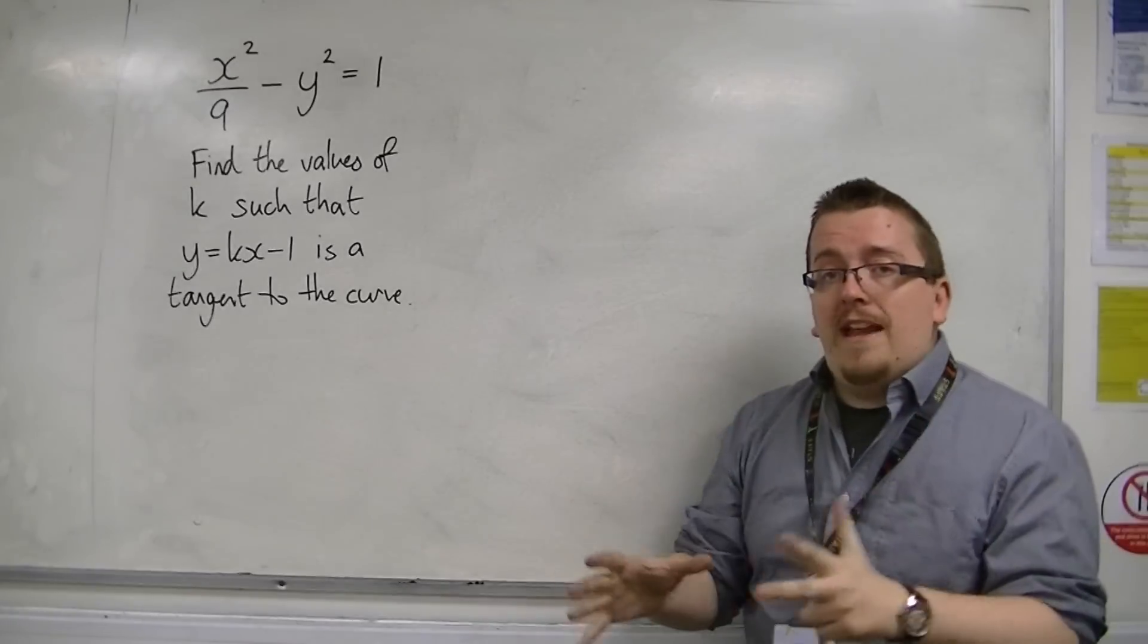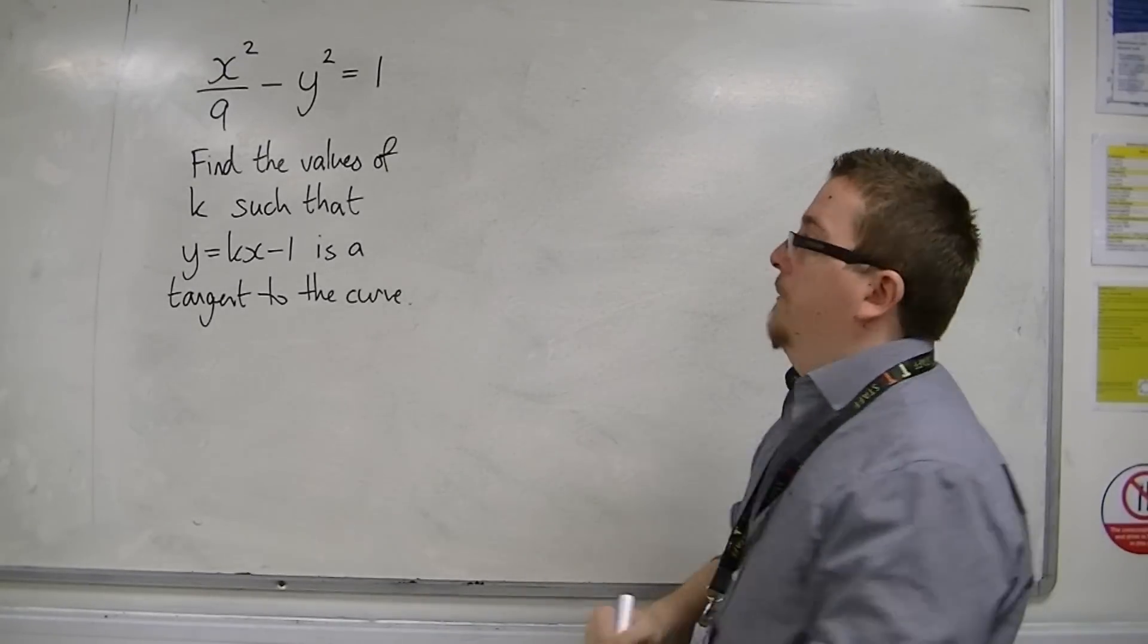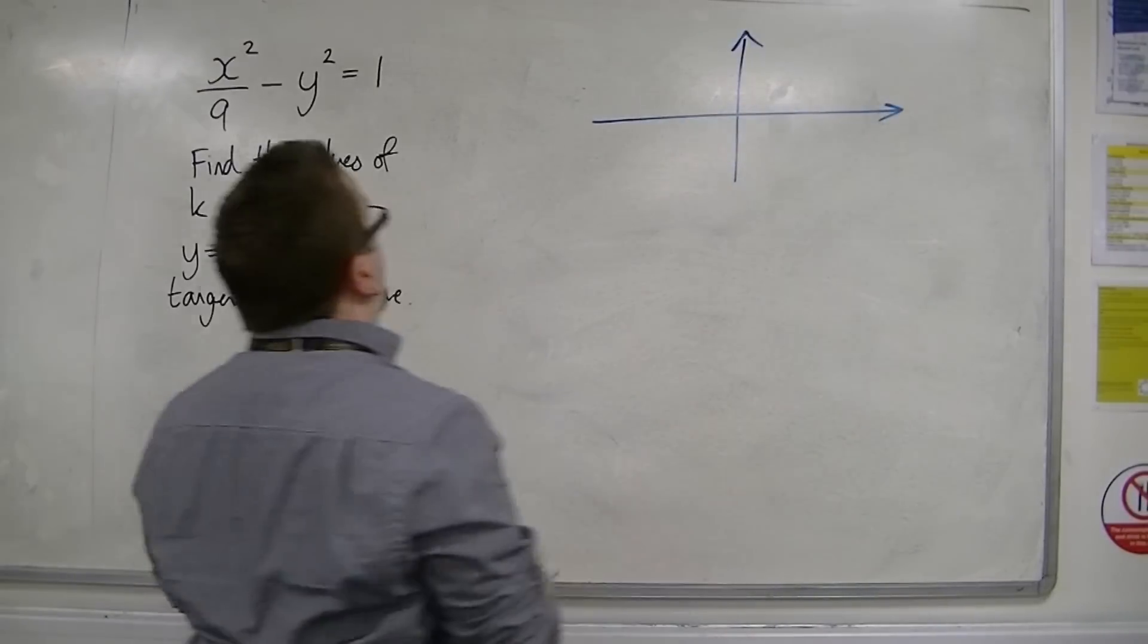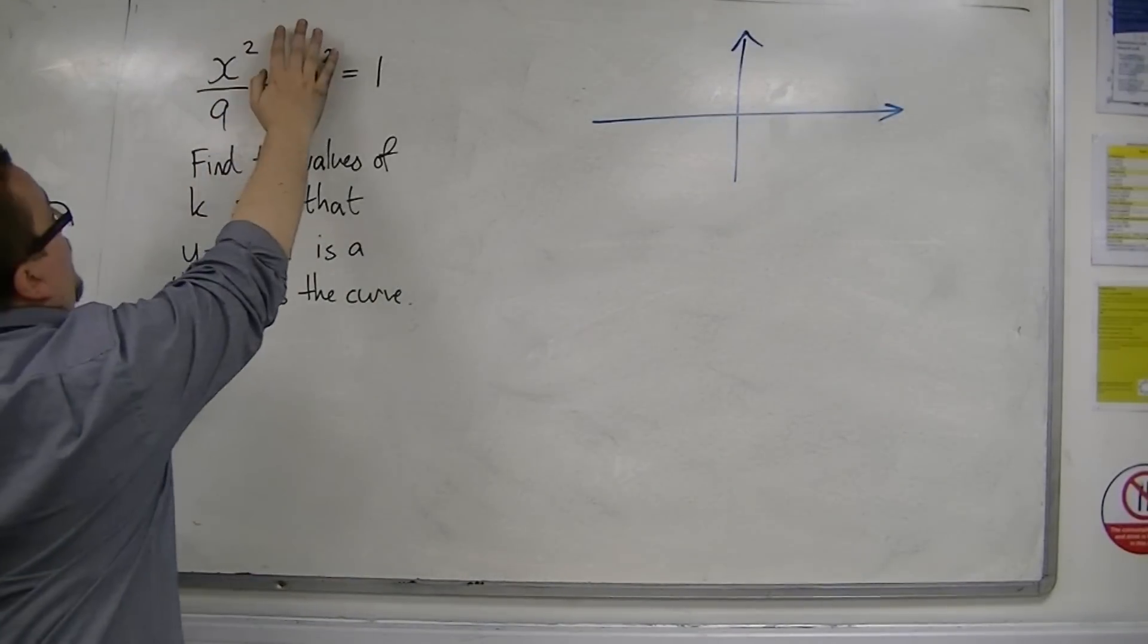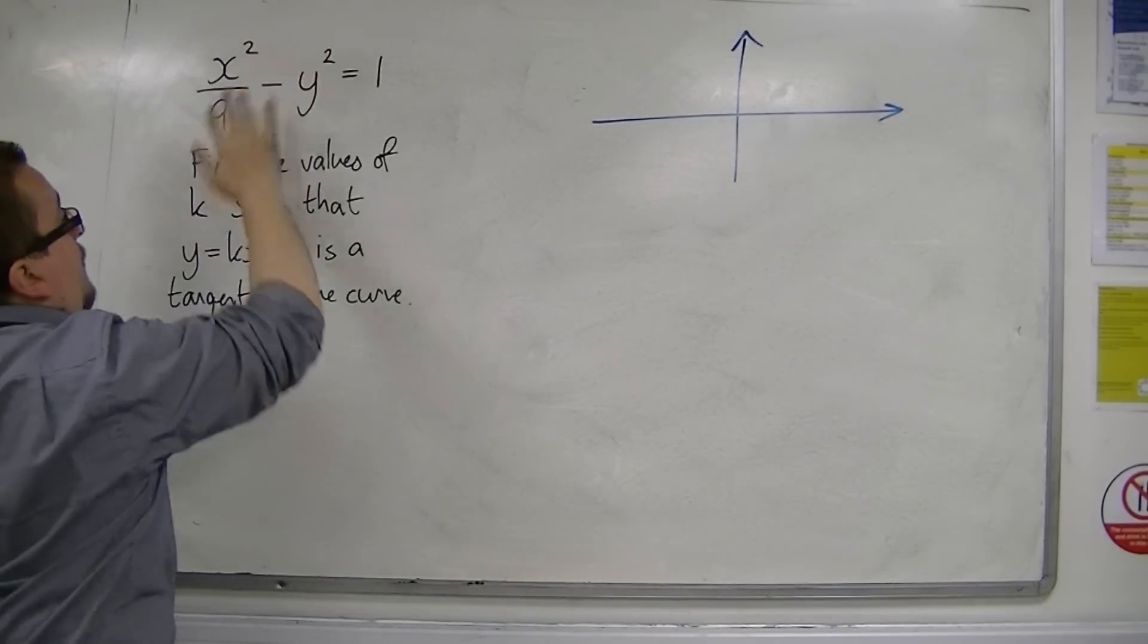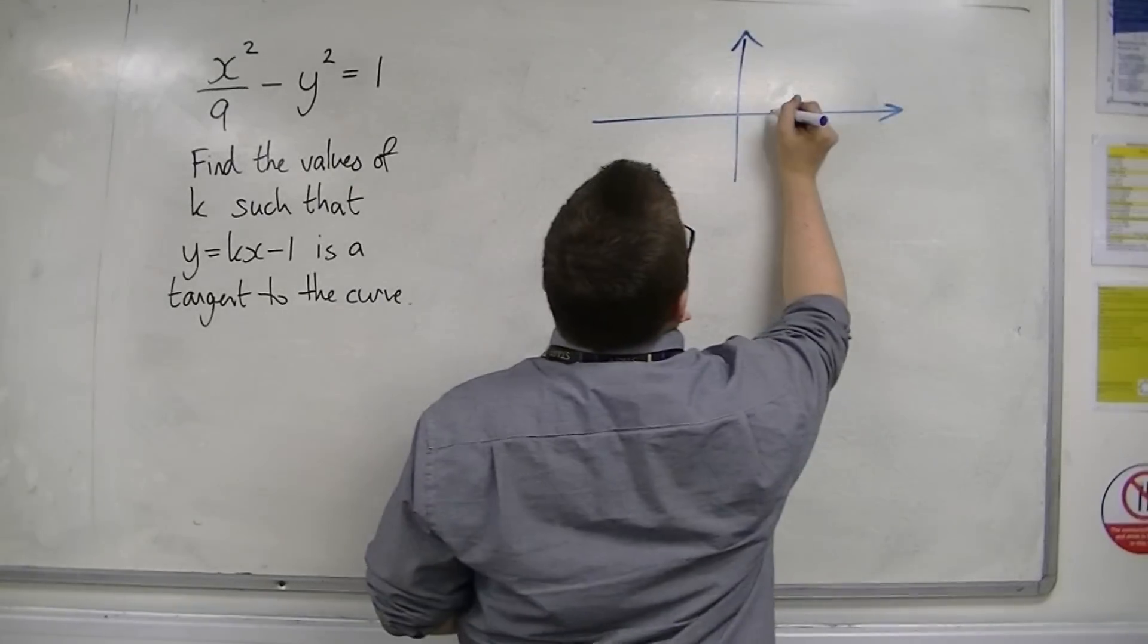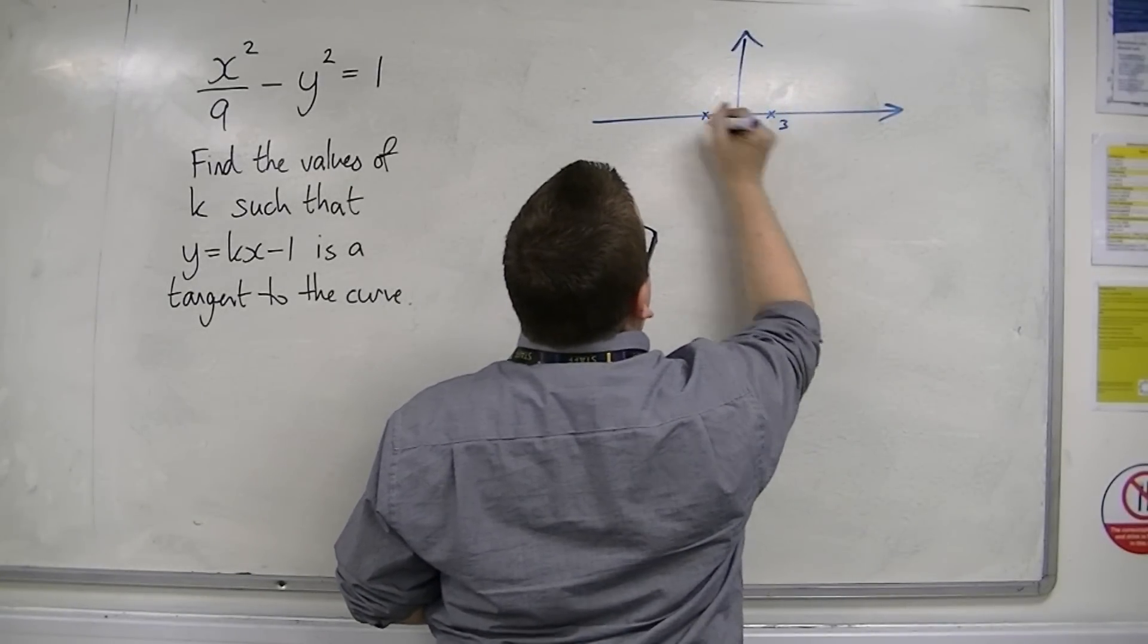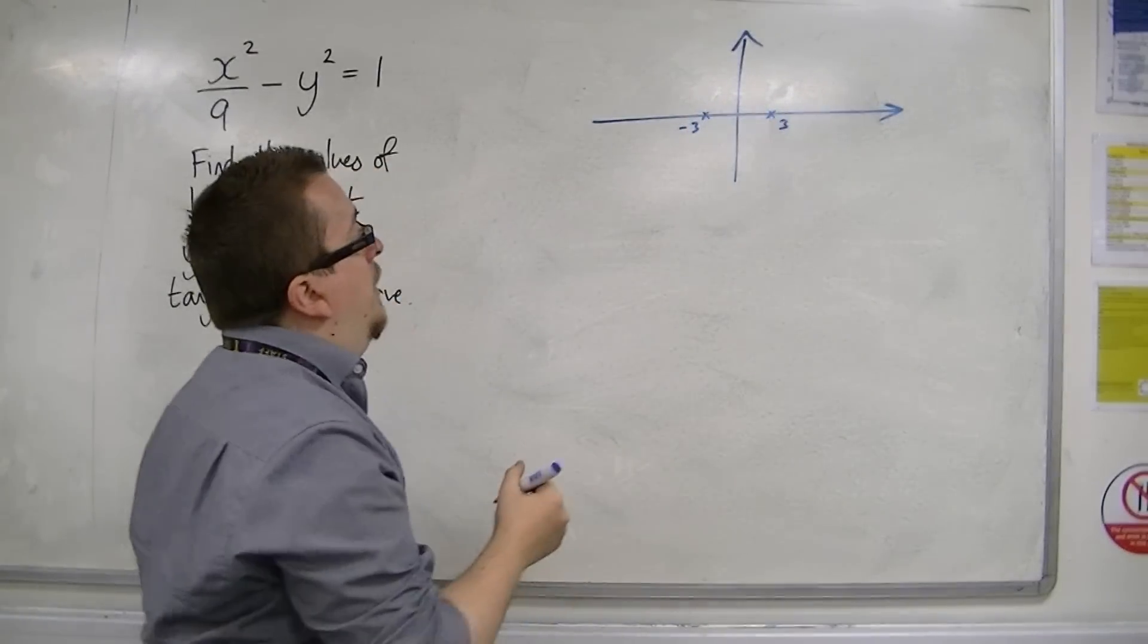What we're going to do first is sketch the hyperbola to see what we're doing. So when y is 0, x is going to be plus or minus 3. So we've got 3 and minus 3. So the curve...